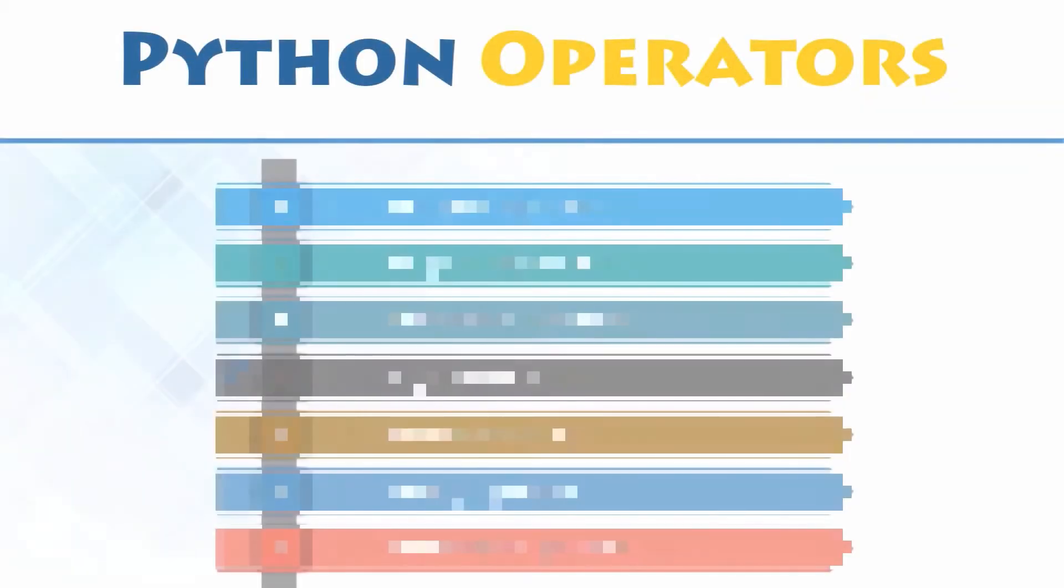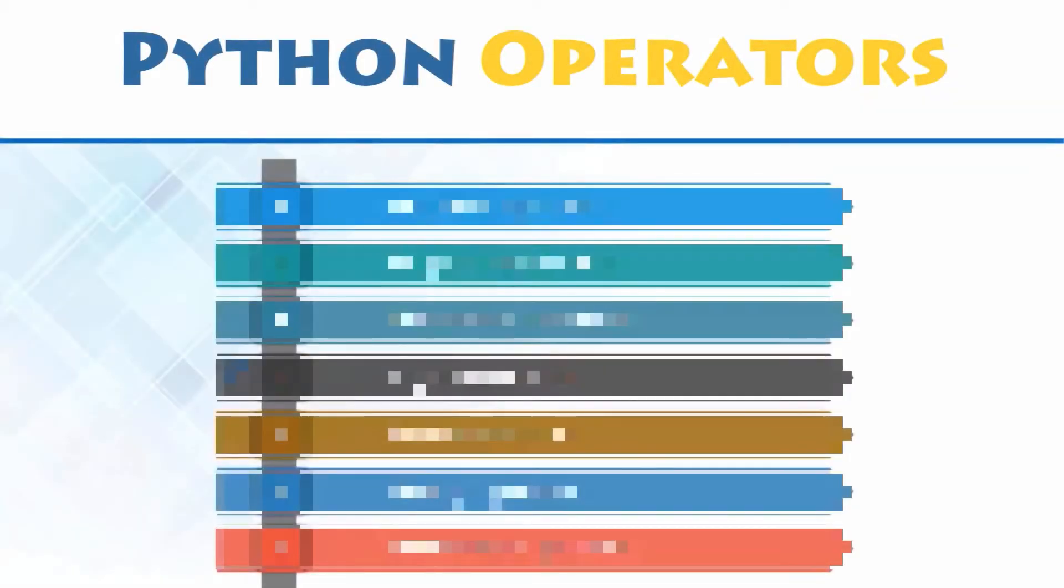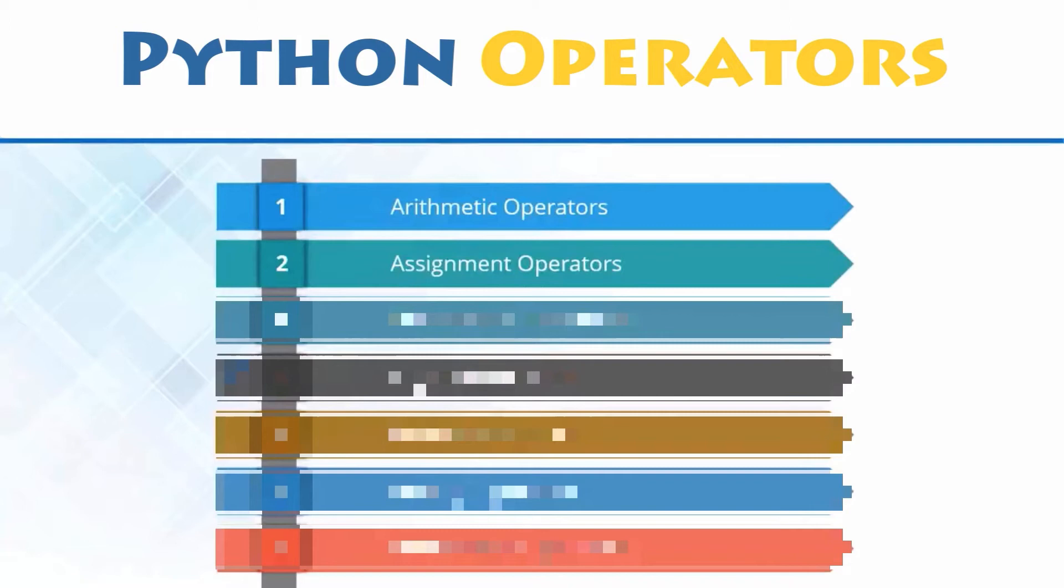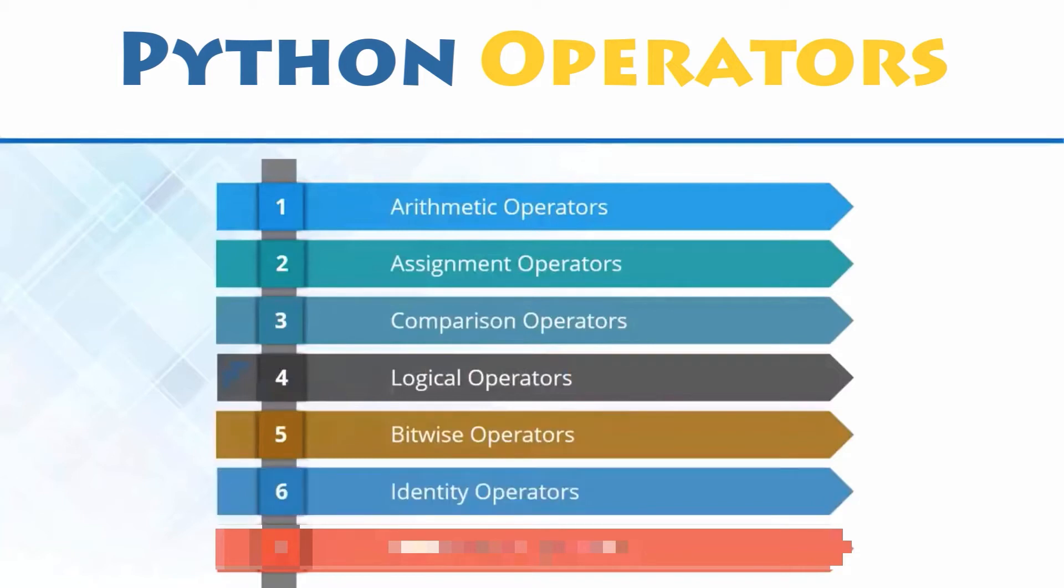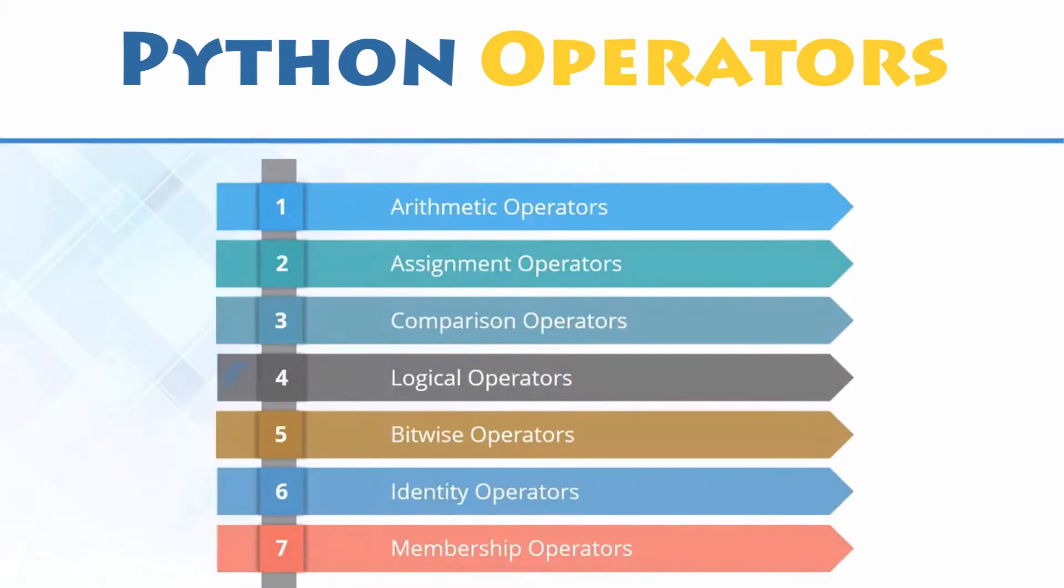Types of operators. Depending upon the type of operations you want to perform, there are seven types of operators in Python: arithmetic operators, assignment operators, comparison operators, logical operators, bitwise operators, identity operators, membership operators.